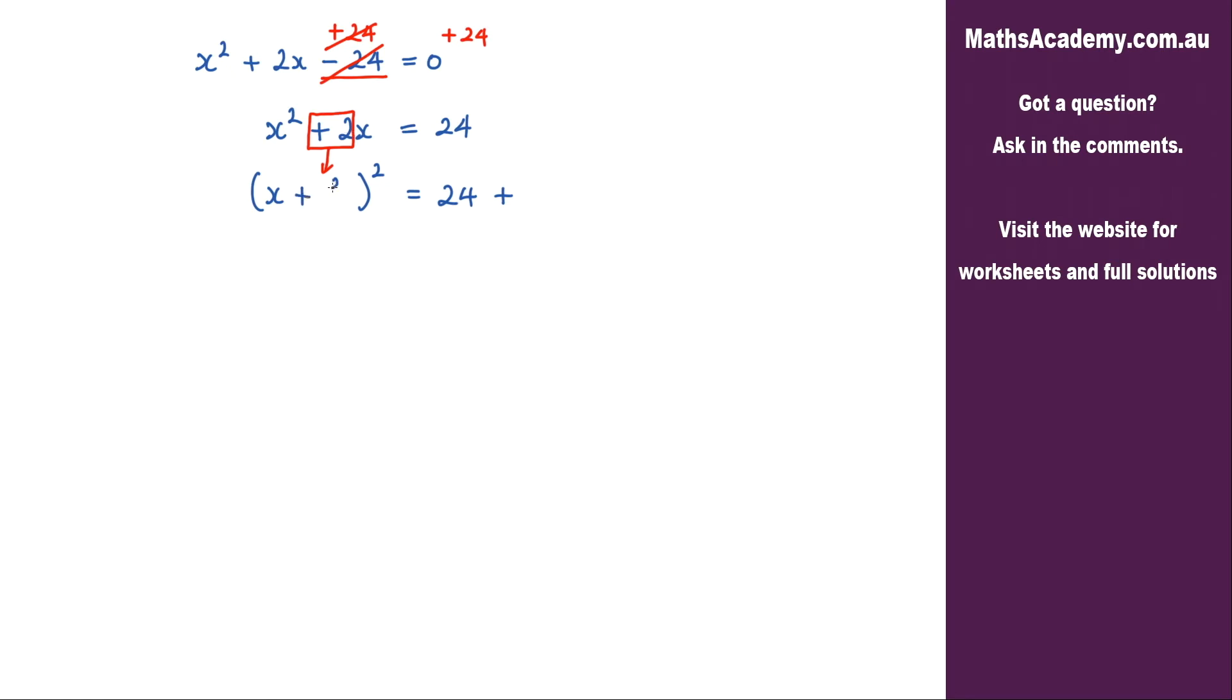We take the coefficient and we divide it by 2. So 2 over 2 and that's going to be squared. Now because we're doing that to the left hand side we do that to the right hand side as well. So we take that coefficient we divide it by 2 and we square it.